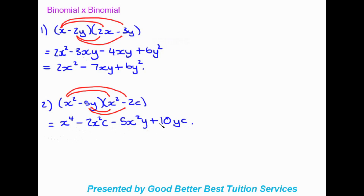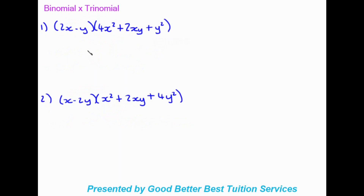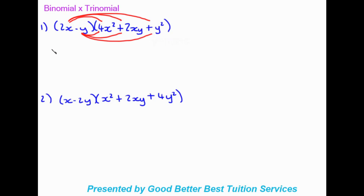Moving on to binomial times trinomial: the first term times into each and every term in the other bracket, and then the same for the second term. So 2x times into each of the three terms, and then negative y times each of the three terms. Always pay attention to what you are multiplying and don't skip any terms, otherwise you'll get the wrong answer.